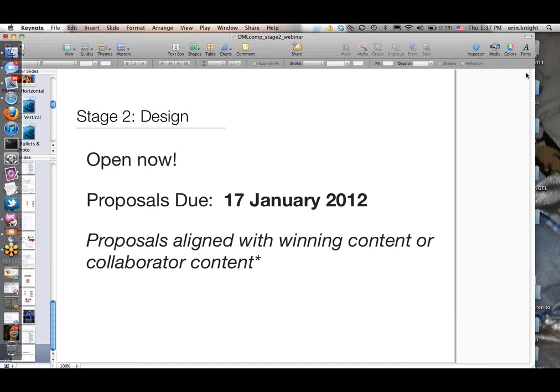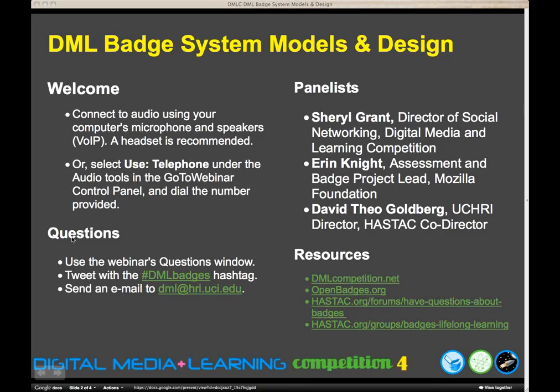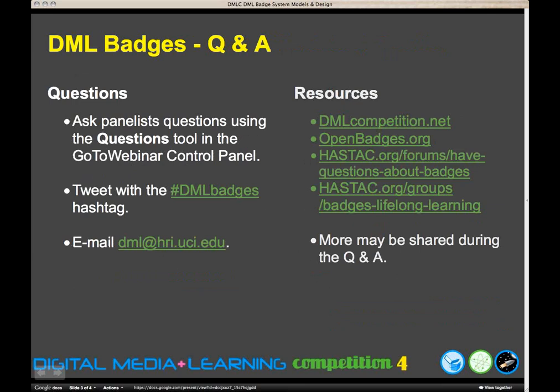Cheryl here. Thanks David, thanks Erin. Yes, the deadline is January 17th, 5 PM Pacific Standard Time. Please follow the blog on dmlcompetition.net. As people get into the holidays and developers and programmers start to ask questions and have more technical things to discuss, we're going to look for a good social Q&A site where we can make it easy for people to have those kinds of conversations. I'll be posting that information in the next week—watch the blog feed. The first question is for David: can you talk about the matchmaking process and whether or not stage one winners are guaranteed to be matched with a stage two winner, and the opportunity to mutually approve a pairing?